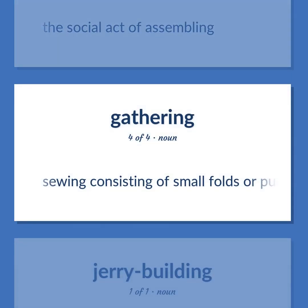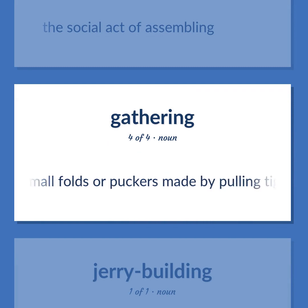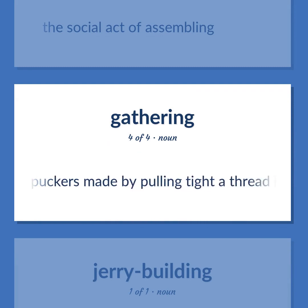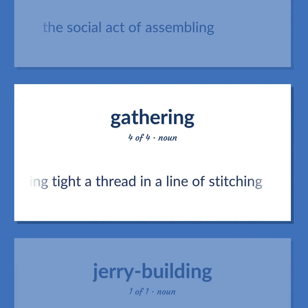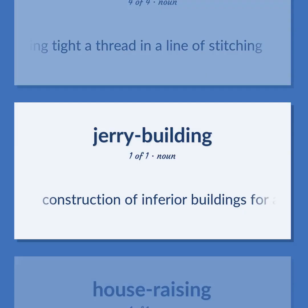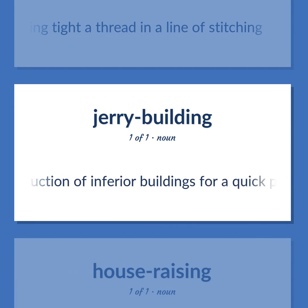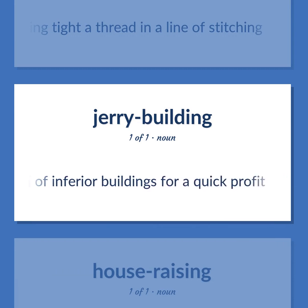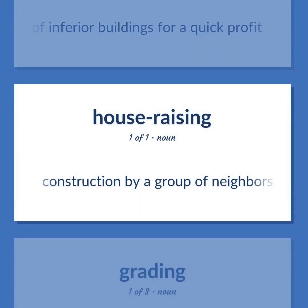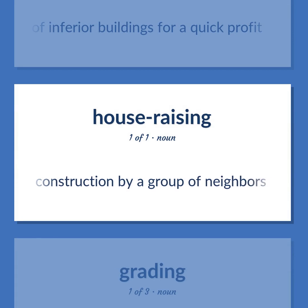Shirring: sewing consisting of small folds or puckers made by pulling tight a thread in a line of stitching. Jerry-building: construction of inferior buildings for a quick profit. Barn-raising: construction by a group of neighbors.